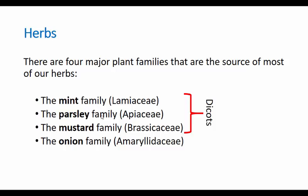At the end of the lecture I'll show you family trees — and in some cases, actual trees. We'll see which of mint, parsley, and mustard are more closely related to each other, with two being closer and one being the outlier. But all three are more closely related to each other than they are to the onion. That's how we're going to start to phrase things.